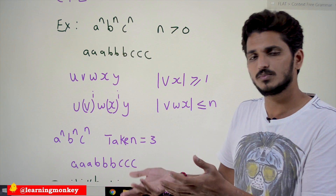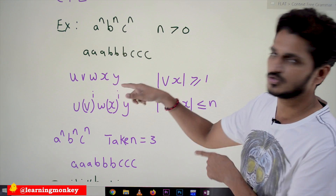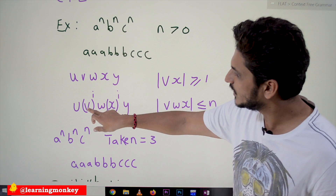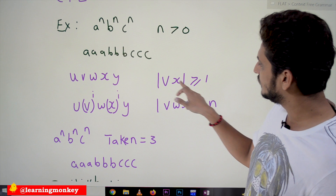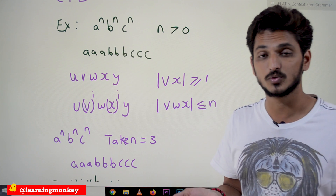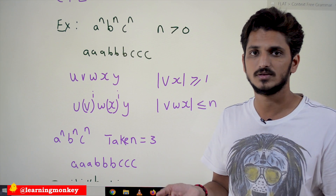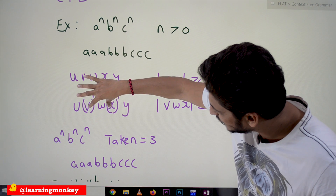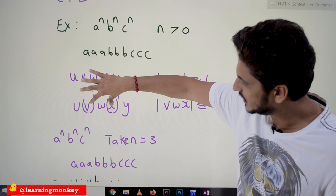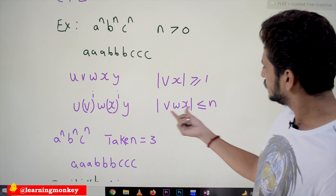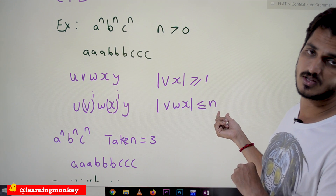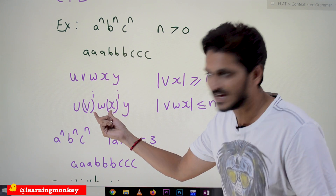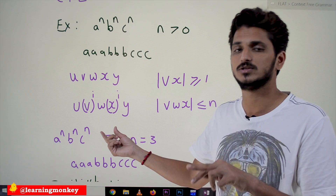If you show it for all the possibilities, we can say that the given language is not a context free language. We follow these conditions: we pump V^i and X^i, so |VX| must be greater than or equal to 1 — you are not supposed to take V and X as epsilon. Also, the middle part V W X must satisfy |VWX| ≤ n. You can take any value of n in order to make the string as short as possible and to check all possibilities.